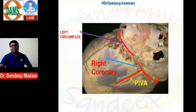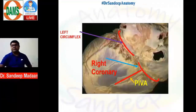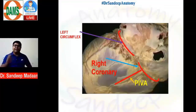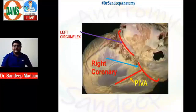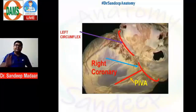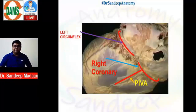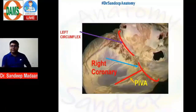Most of the time, PIVA is a branch of the right coronary artery. PIVA determines the dominance of the heart — if PIVA is a branch of the right coronary, we say it is right dominance.